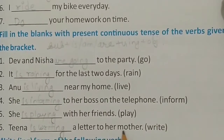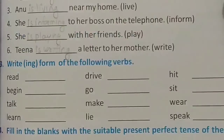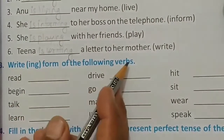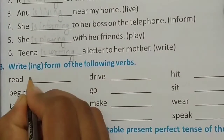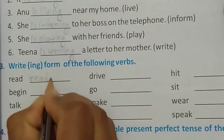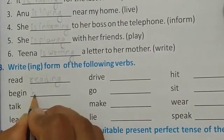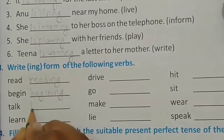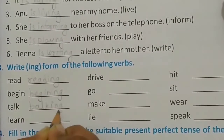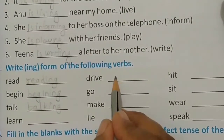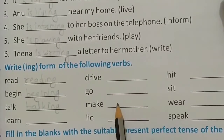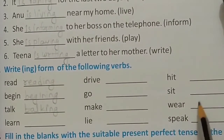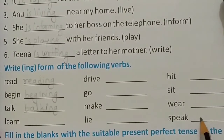Question number three: write the ING form of the following verbs. So: read becomes reading, beginning, talking, learning, driving, going, making, lying, hitting, sitting, wearing, speaking.